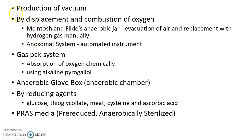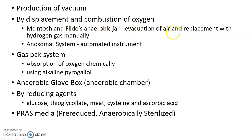What are the ways to produce an anaerobic environment? Anaerobic environment can be produced by production of vacuum, by displacement and combustion of oxygen. This can be done by the McIntosh and Fildes anaerobic jar, which involves evacuation of air and replacement with hydrogen gas manually.